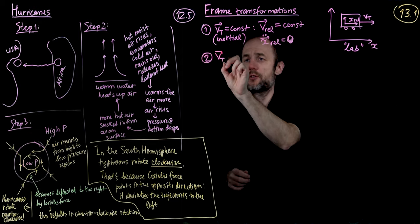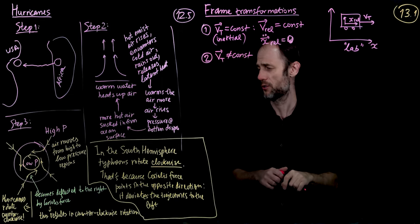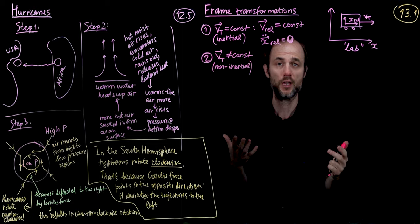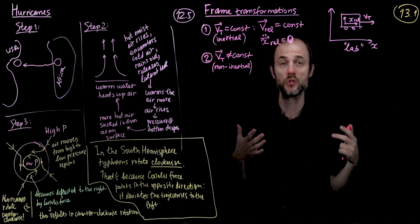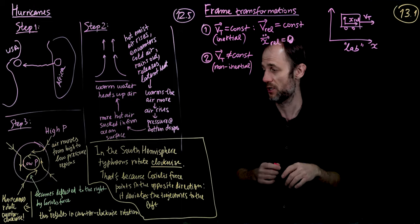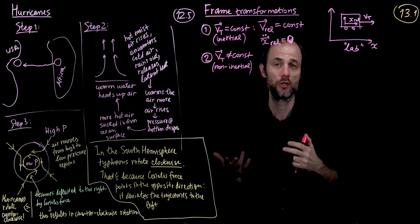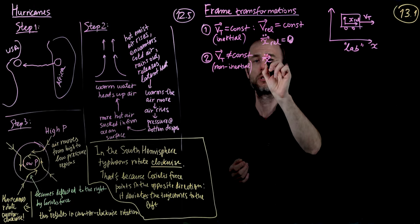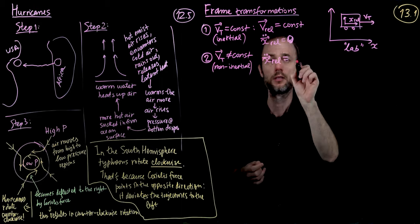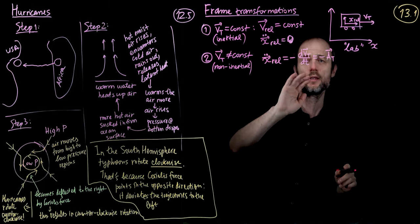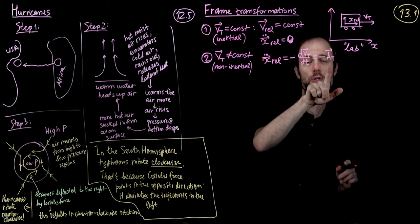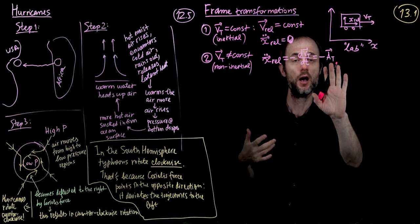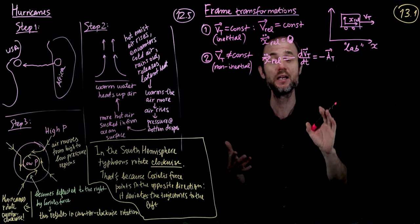We also considered case 2, where the velocity of the train was not constant. This is a non-inertial frame. In this case, equations of motion look different in different frames. In non-inertial frames, we now have effective forces — forces due to the non-inertial nature of the frame. The equations of motion include an effective force due to the acceleration of the frame.